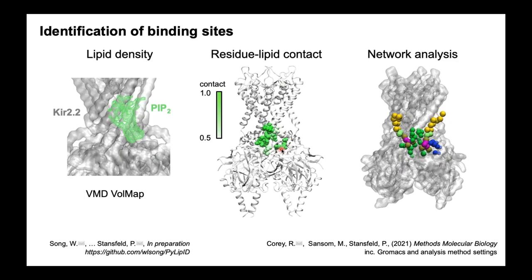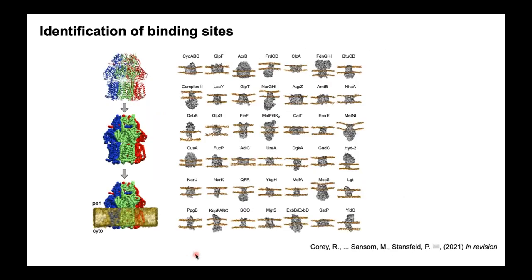More recently, we've been extending this analysis using network analysis with graph theory to look at which residues are interacting with specific lipid molecules at the same time, and then clustering these into sites. For the same data, we can actually see two different sites where two lipids are able to bind. We've written this into a Python package you can download from GitHub called Pilip ID — a fast, rigorous and automated way of looking at binding sites. As an example, using 42 different E. coli membrane proteins, we've been able to identify over 700 binding sites for the lipid cardiolipin.